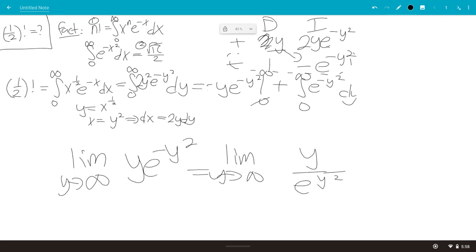And e to the y squared... E to the y squared grows much faster than y, so this limit goes to 0. So this goes to 0, too, so this is basically null.